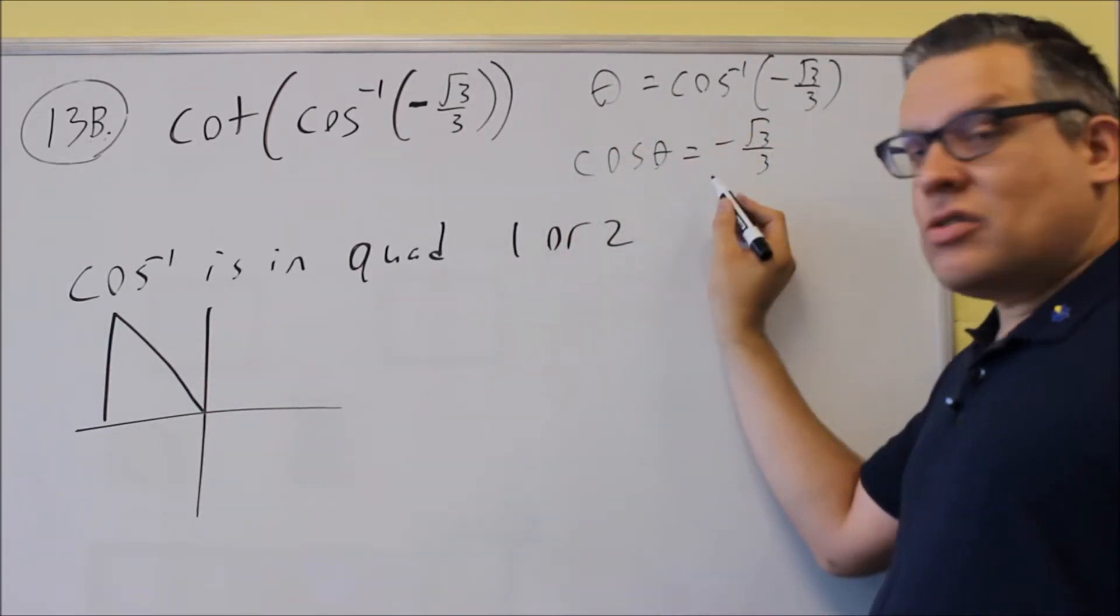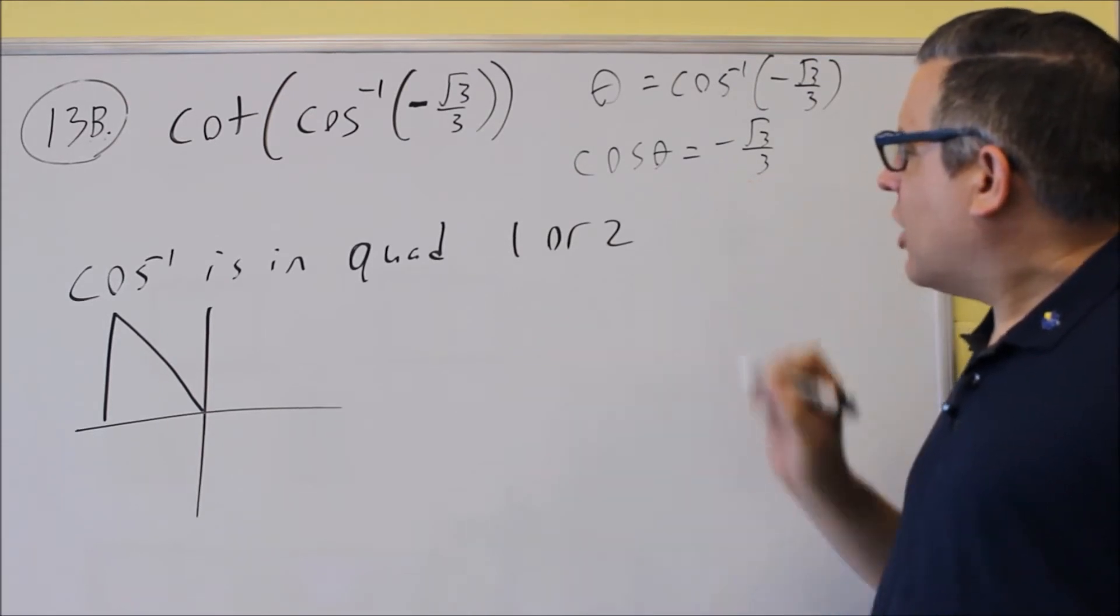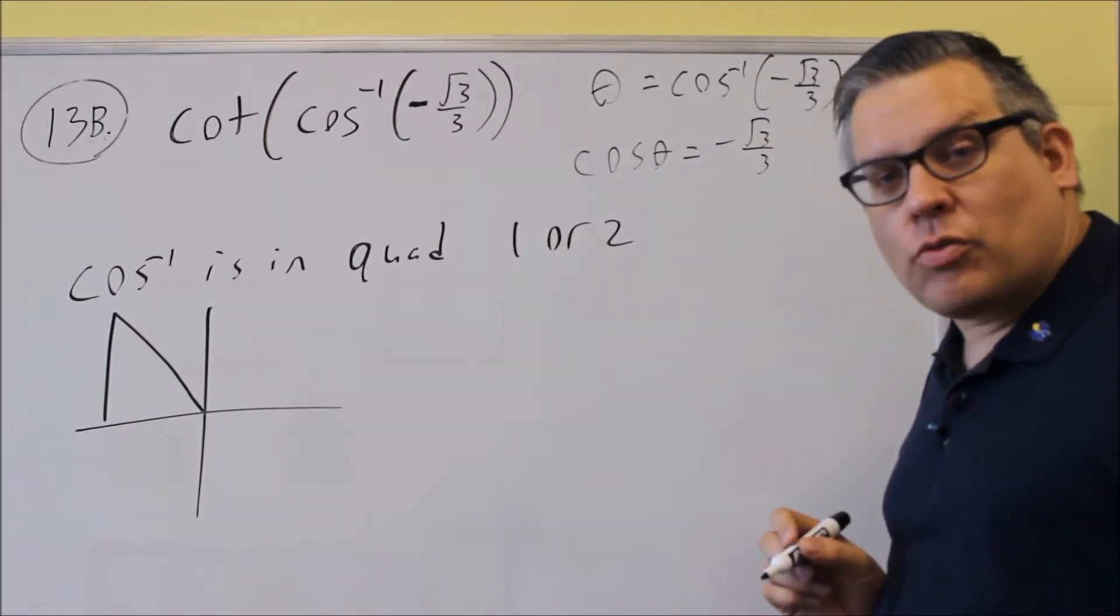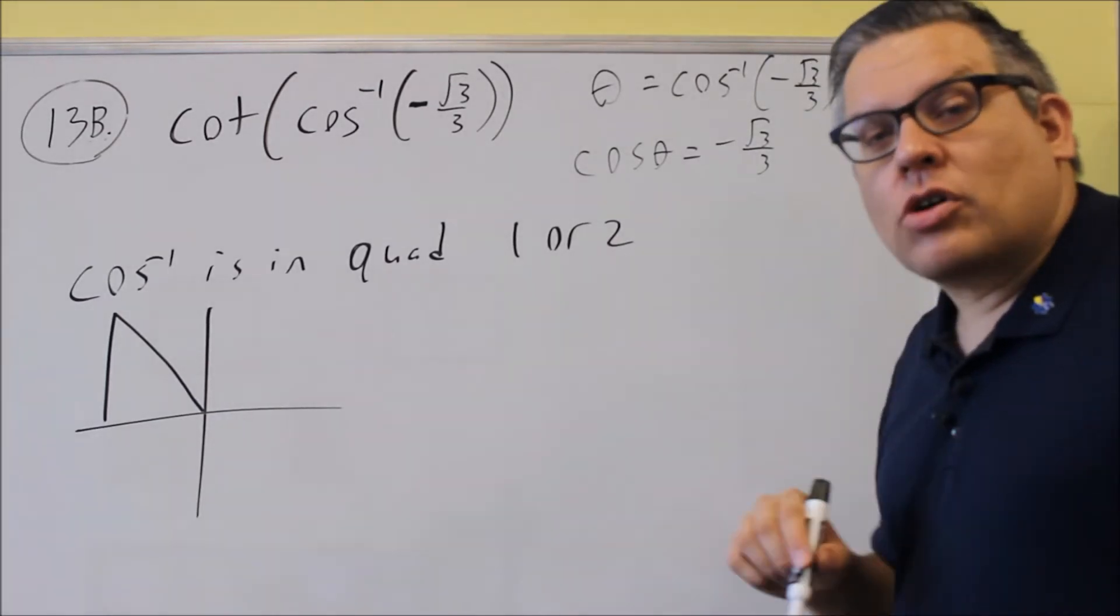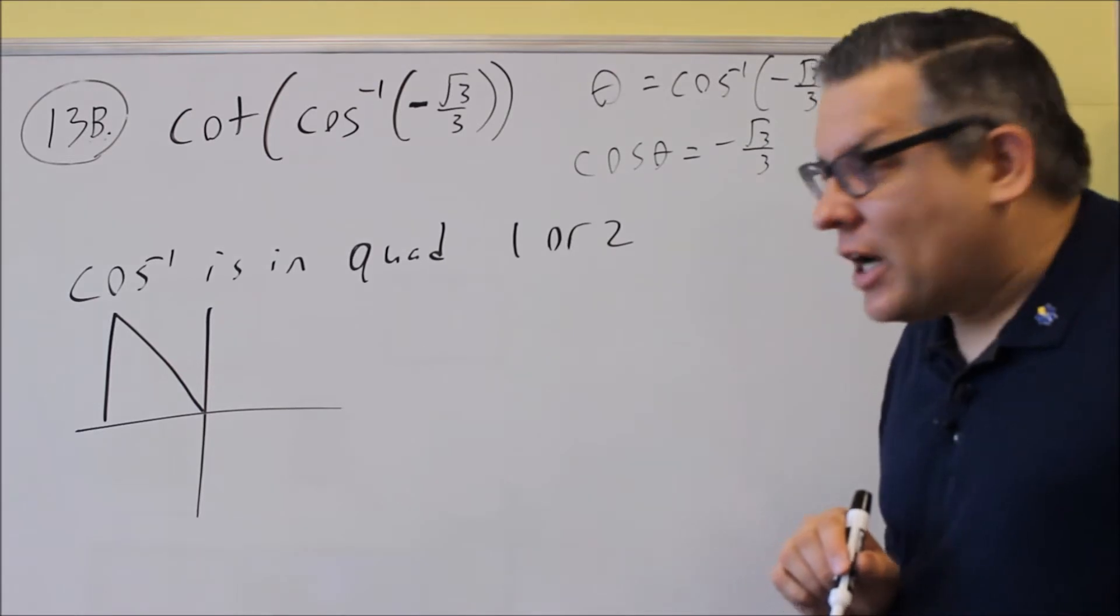We're going to use this right here in order to label our sides. We have cosine is equal to negative square root of 3 over 3, and the definition for cosine is adjacent over hypotenuse.